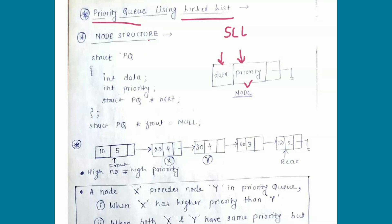First we will discuss the node structure for the priority queue. We have data, and we also need to add priority — that is a new point compared to a single linked list implementation. Here we are considering an integer priority, and the third field is our next pointer. We make the linked list empty by setting front equal to null.